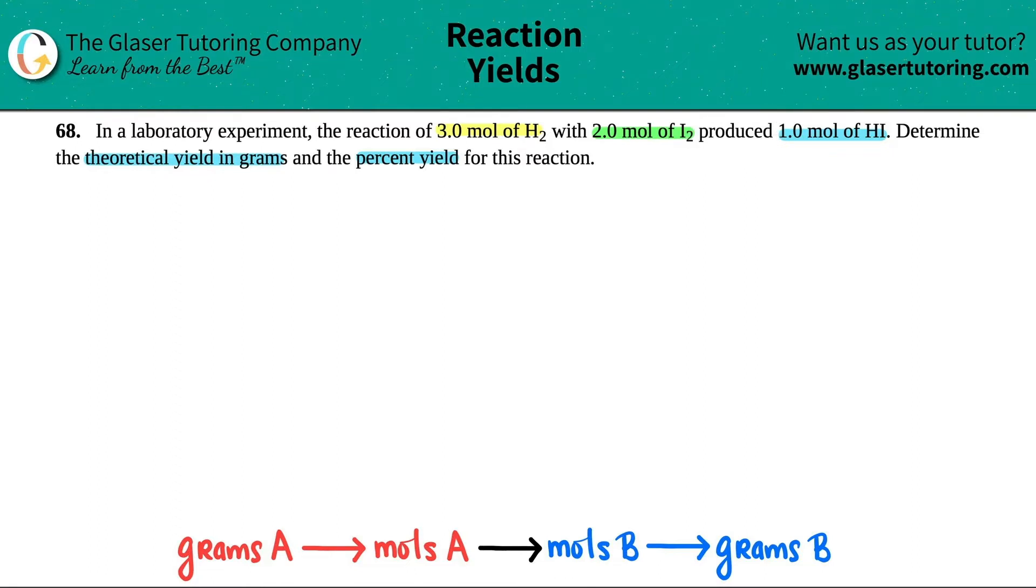We produced or we made HI, so that's a product. So I know that HI is going to be on the product side. And it was produced by the reaction of H2 and I2, so that's the reactants. Now that's my equation, but I just got to make sure that it's balanced. I have two hydrogens and two iodines, so I need a two here. And now we are good to go.